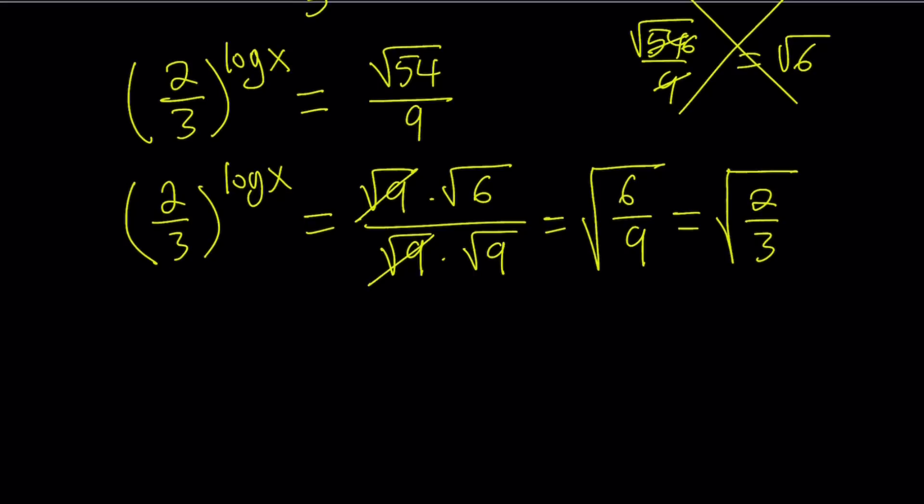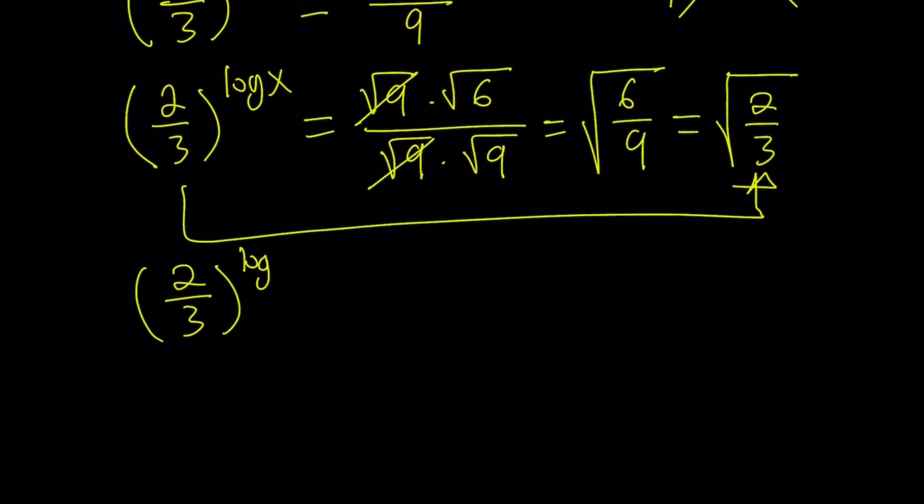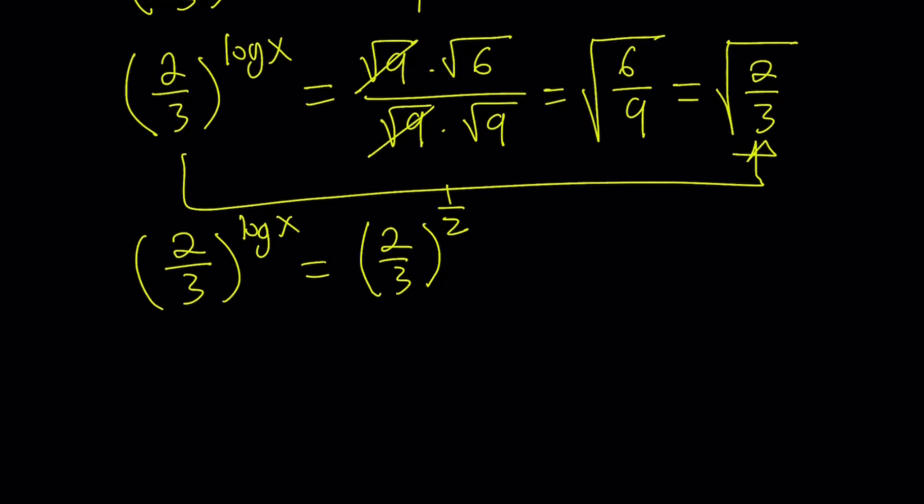Now look at the first expression and the last one. And if you compare those two directly, you're going to notice that we can find log x from here. The square root of 2 thirds can be written as 2 thirds to the power 1 half. As you know, we can write a radical using fractional exponents. And this is how we do with square roots. So from here, since the bases are the same, we can safely say that log x is equal to 1 half.